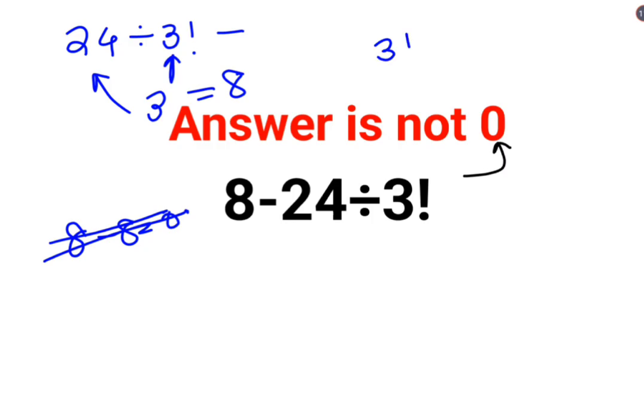The reason for that is 3 factorial. Means whenever you have an exclamation mark ahead of a number, that means you have to expand that number as products of consecutive numbers but in decreasing order till you reach the value of 1. So basically this becomes 3 multiplied by 2 multiplied by 1 whose answer is 6.